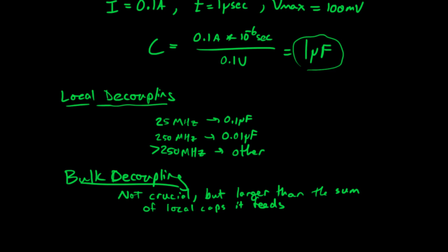Well, the value of the bulk decoupling capacitor is not crucial, but it needs to be larger than the sum of all of the local decoupling capacitors that it feeds. It's more than a little hand-wavy. This is a lot hand-wavy and not particularly analytical, but this is the general framework in which you should think about it.